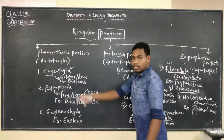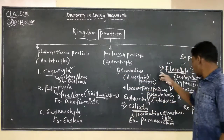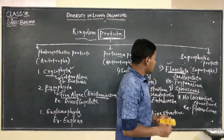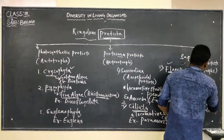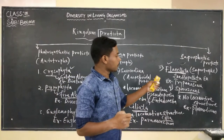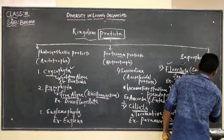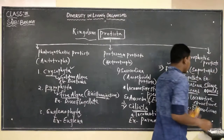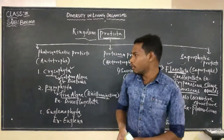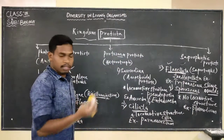So we saw three groups in photosynthetic protists, and here we discussed four groups for protozoan protists. For saprophytic protists, they grow on dead and decaying matter. The example of organism here is slime molds — slime molds are grouped under saprophytic protists. So in today's class we have learnt about the brief classification of Protista, and in the next class we will discuss about Kingdom Fungi.